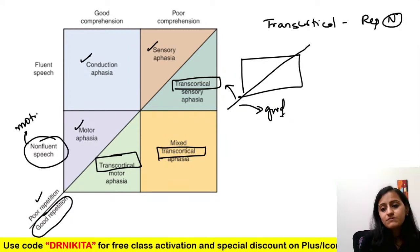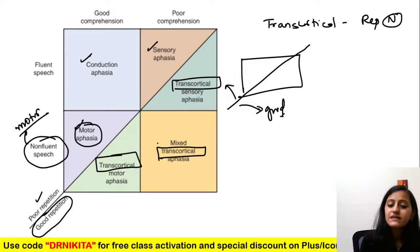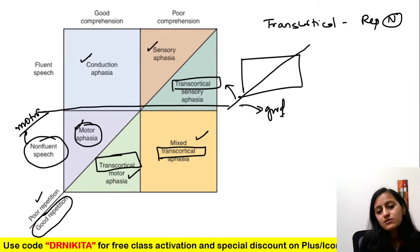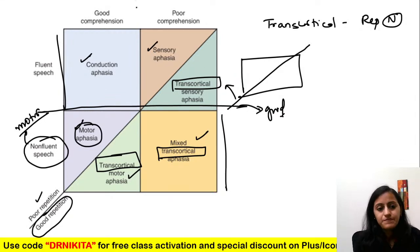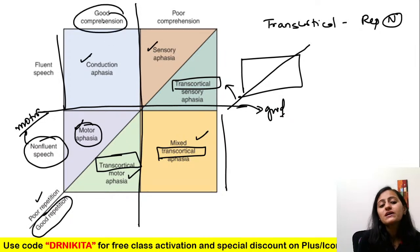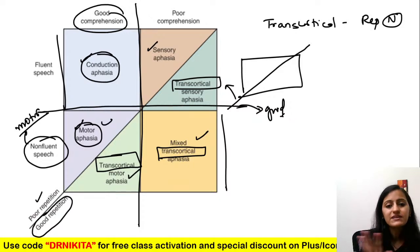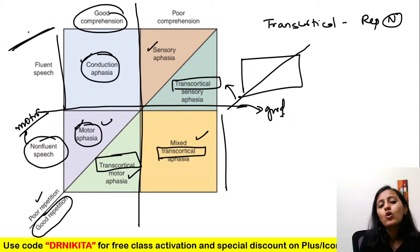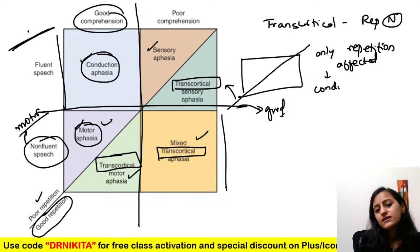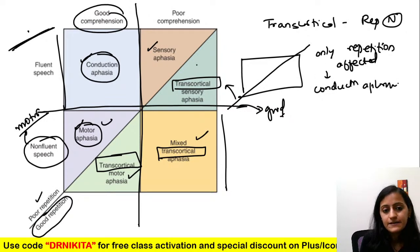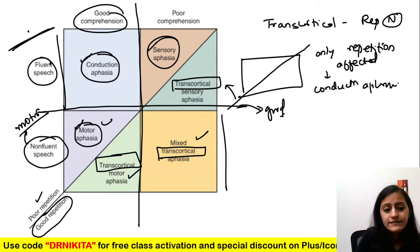Which has non-fluent speech? It is motor aphasia, transcortical motor aphasia, or mixed transcortical — the ones where the motor area is affected. Sensory and conduction aphasia have normal fluency. In motor aphasia, comprehension is good — the problem is in expressing. In conduction aphasia, both Broca's and Wernicke's are intact — only the conduction is affected, so only repetition is gone.